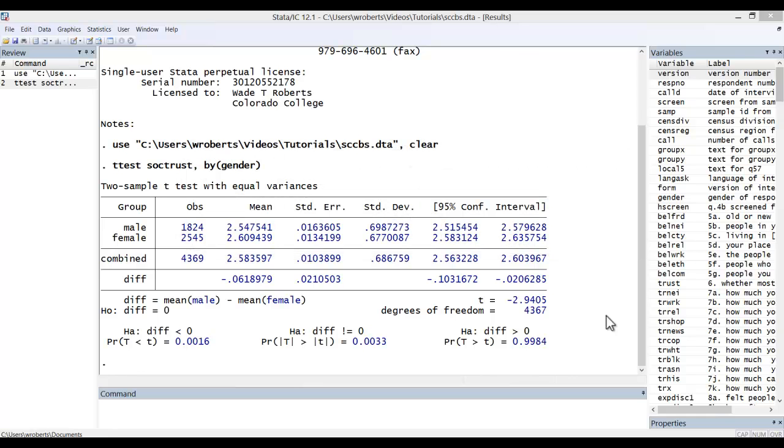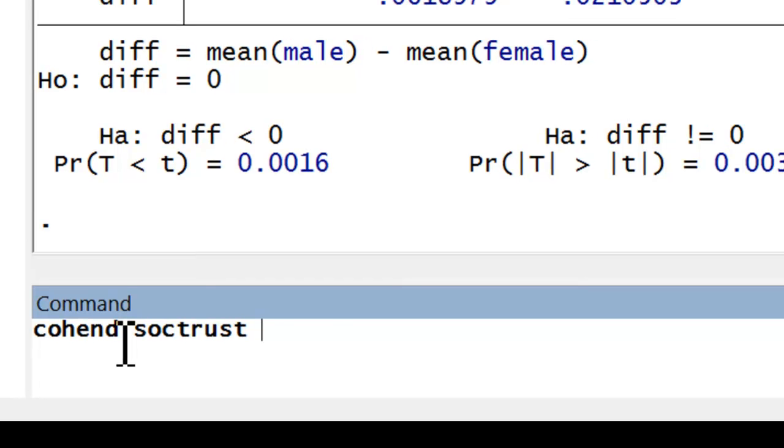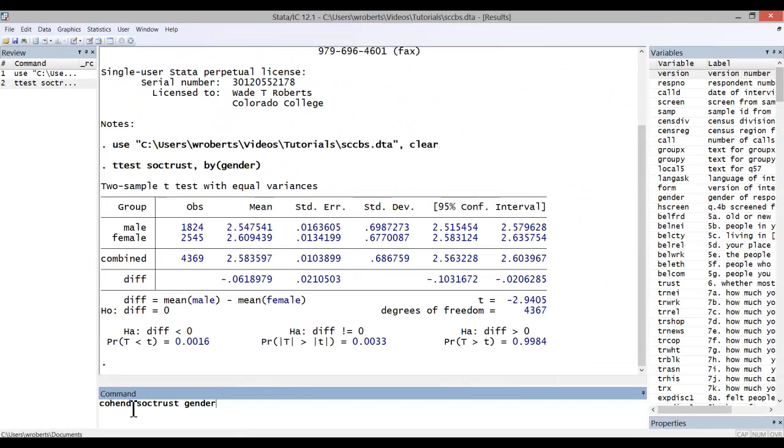Fortunately, there's a user written command in Stata for Cohen's d and it's quite simple. In the command window, you simply type cohend, then your interval variable, in this case social trust, and then your dichotomous variable, gender in this case, and hit return.